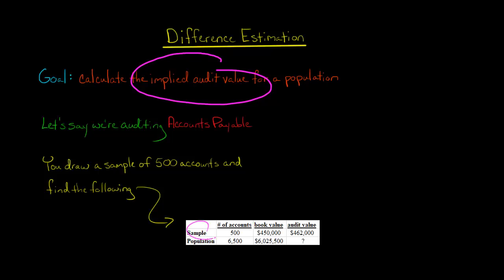Now we draw a sample from that population of 500 accounts. We don't look at all 6,500 - we don't have the time. So we look at 500 of them, and those 500 have a book value of $450,000 and an audit value of $462,000.